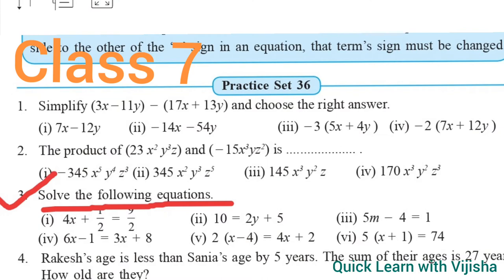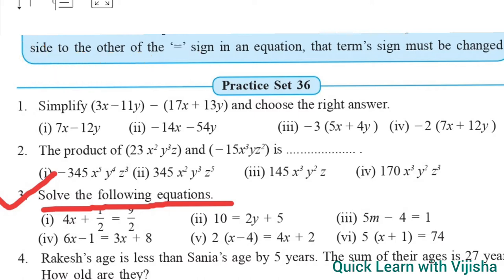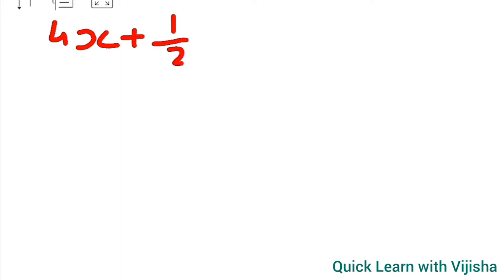Hello children, welcome to my channel. Today we will see Class 7 Practice Set 36, Question Number 3. The questions are to solve equations in one variable. The first question is 4x plus 1 upon 2 is equal to 9 upon 2.